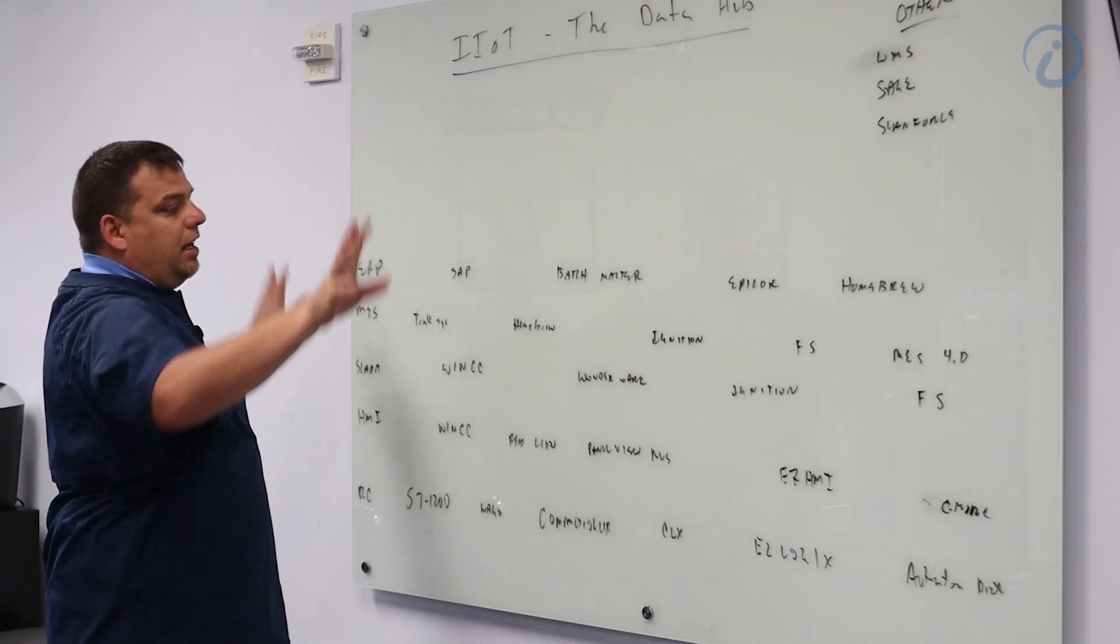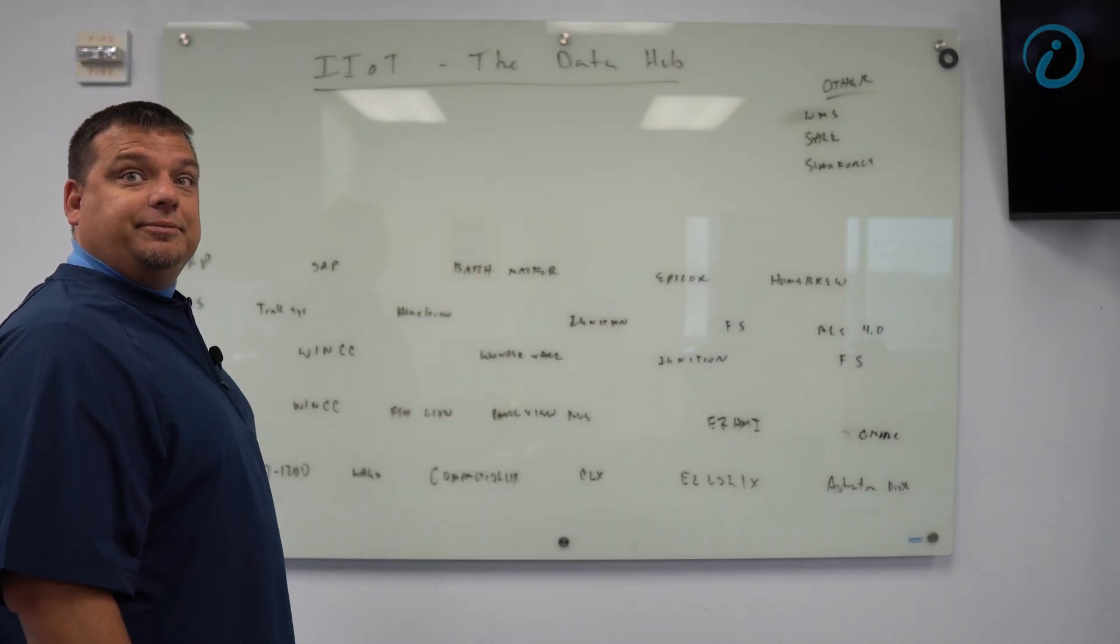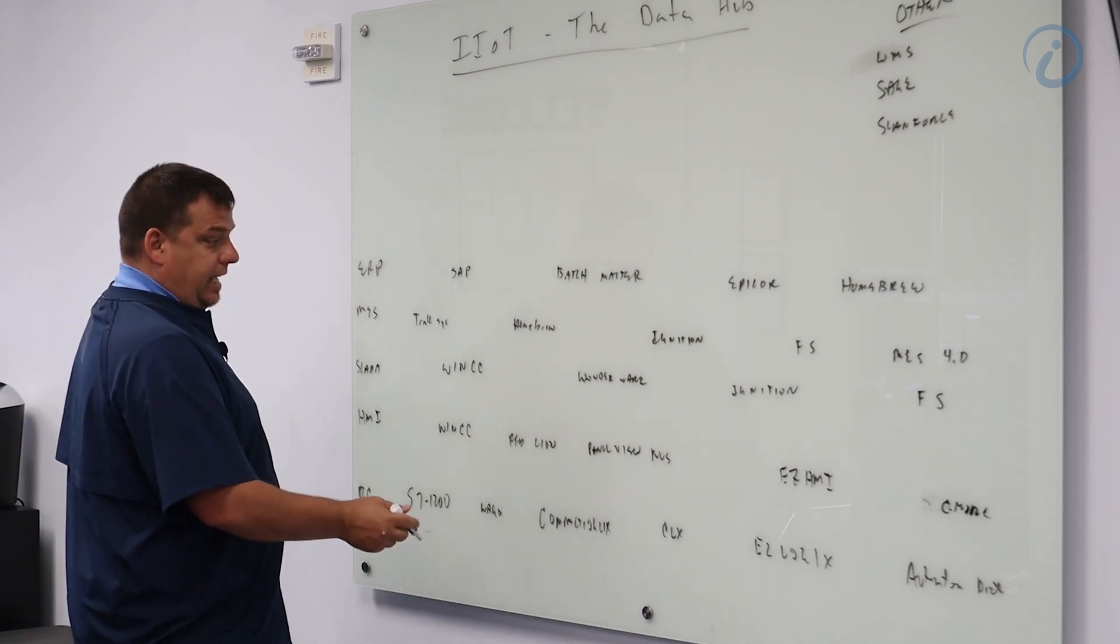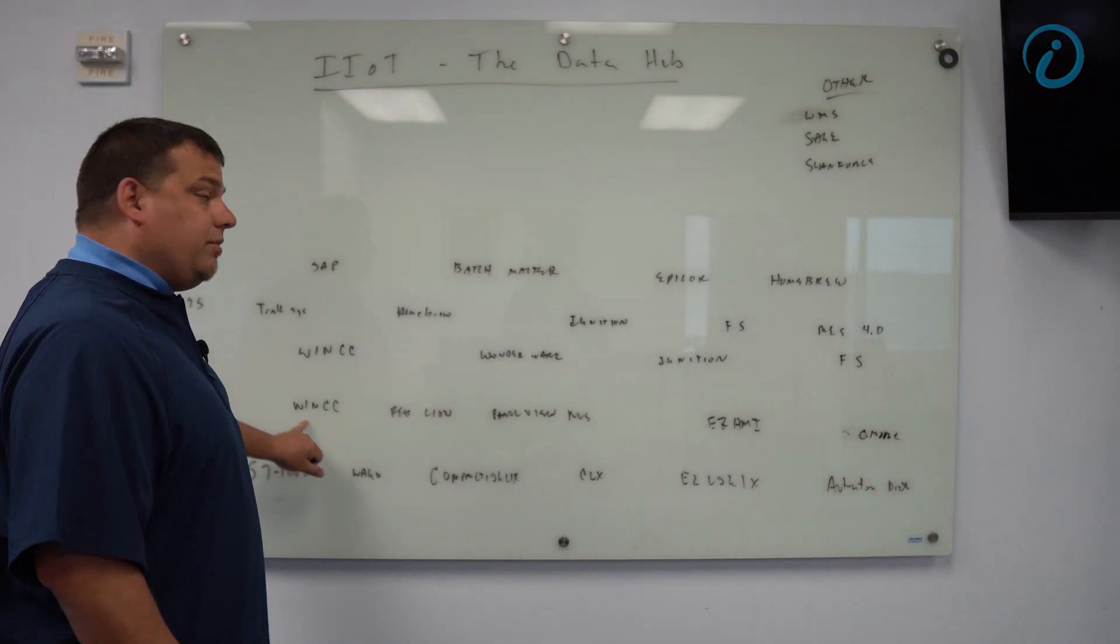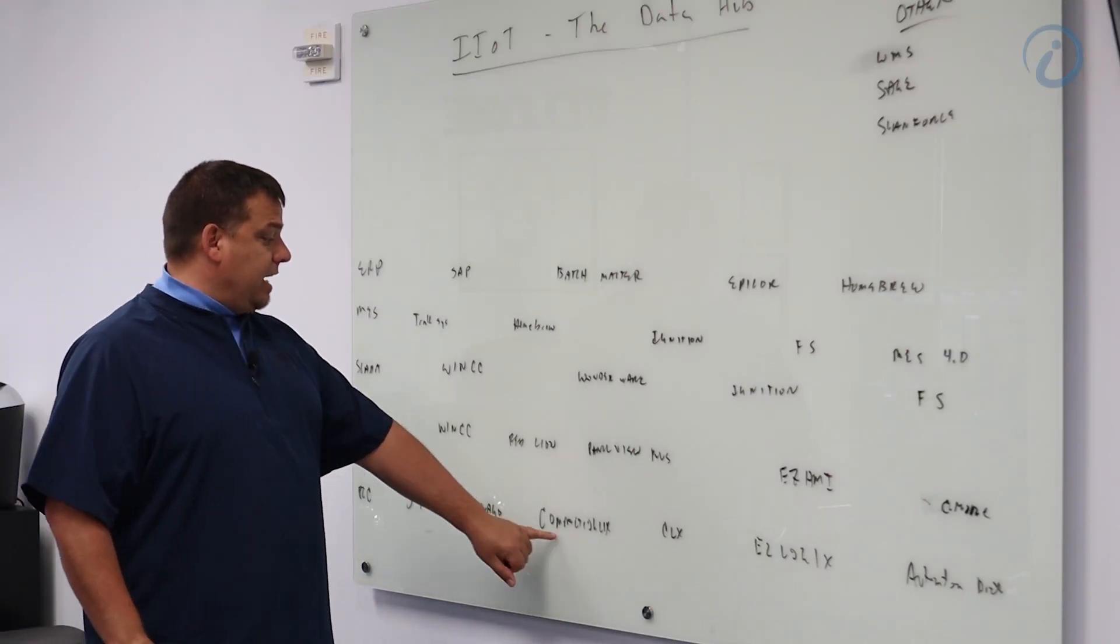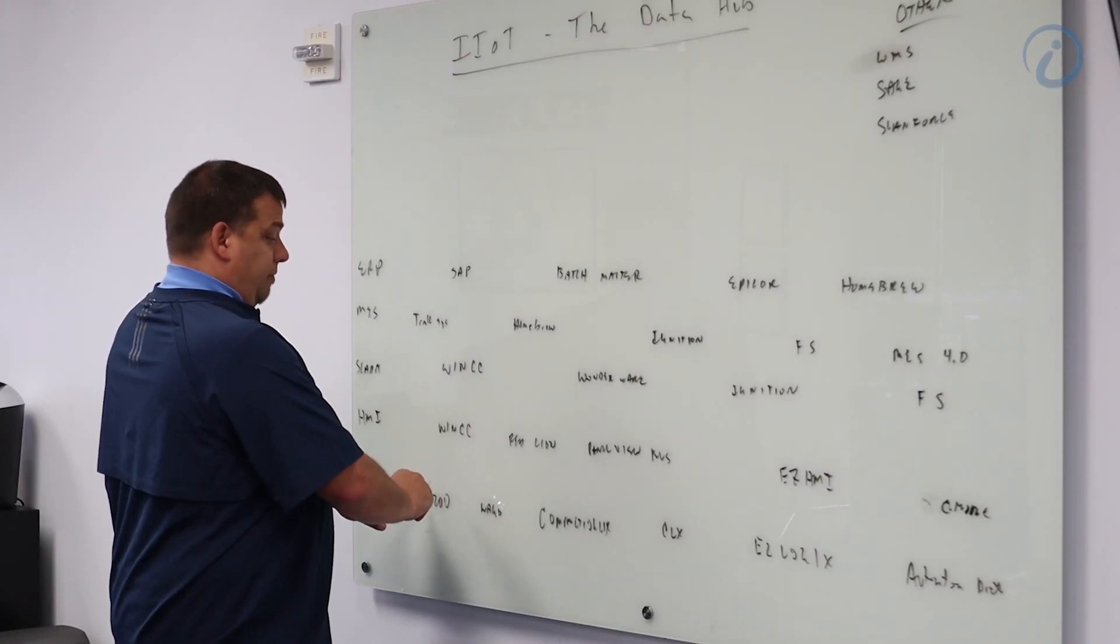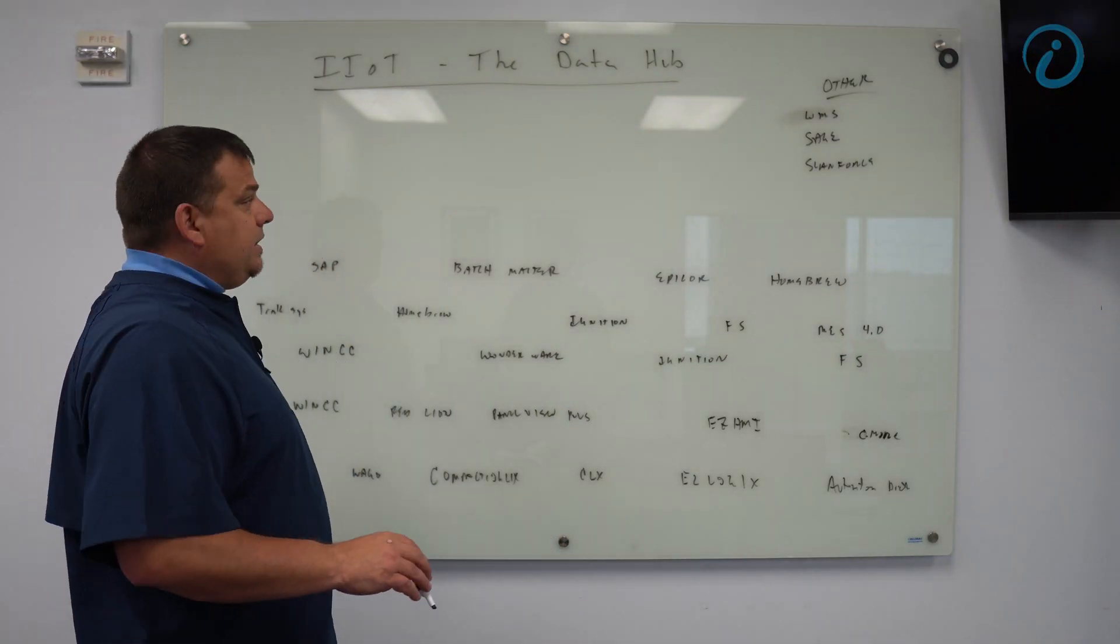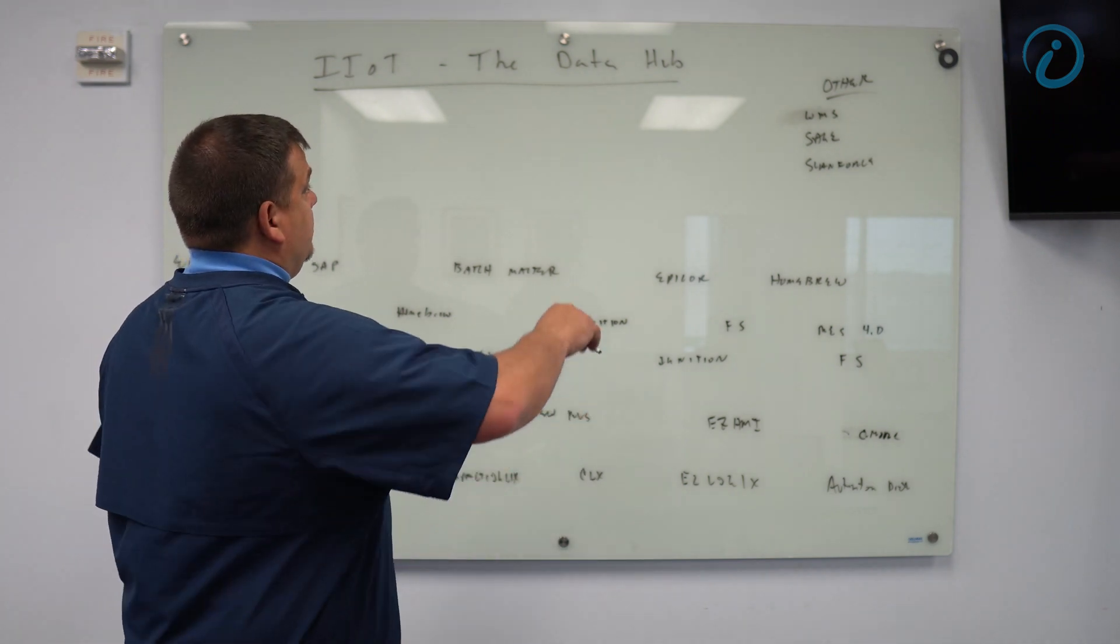When we talk about the data hub, right now everything you see on this screen looks messy. There's no organization to any of these layers. In some cases I may have a connection between the S7 1200 and WinCC, I may have a connection between my Compact Logix and my Red Lion. I may also have my PLCs talking to an OPC server.